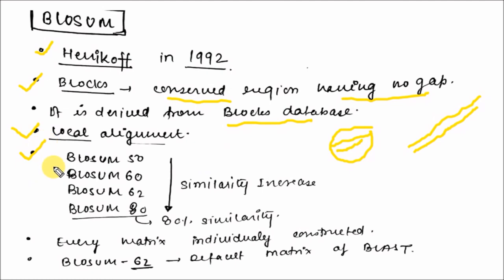Blocks represent the similarity of the alignment. When the number of BLOSUM matrix increases, it represents higher similarity. That is BLOSUM 50 is 50 percent similarity, 60 is 60 percent, 62 is 62 percent similarity, 80 represents 80 percent similarity. The BLOSUM 62 is the default matrix for BLAST. BLAST is Basic Local Alignment Search Tool. It is the tool for local alignment.